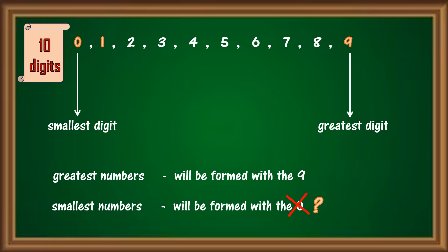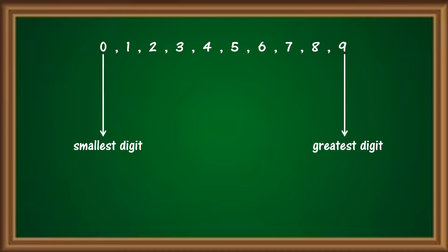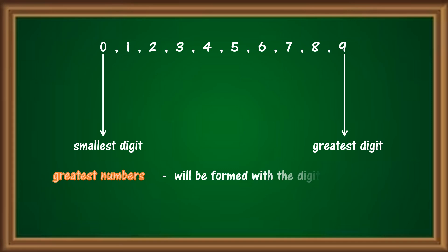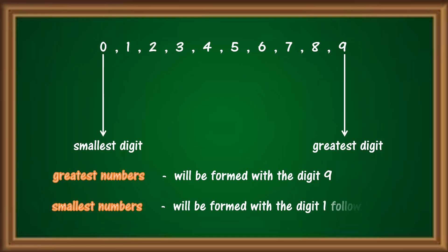So, now we know that the smallest numbers will be formed with the digit 1 followed by 0. Now you know the rule. The greatest numbers will be formed with the digit 9, and the smallest numbers will be formed with the digit 1 followed by the digit 0.